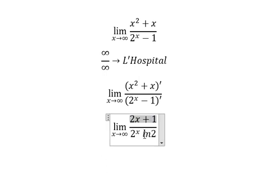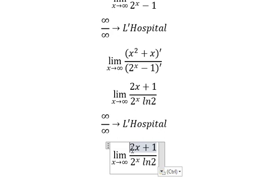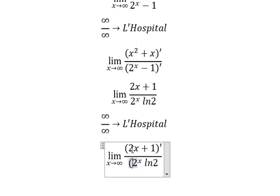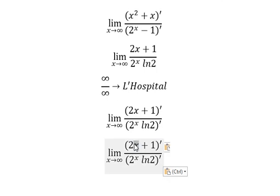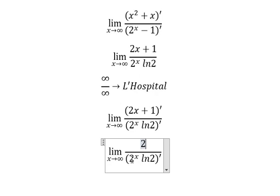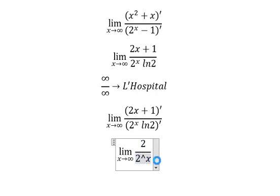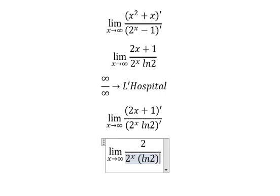Now if this one goes to positive infinity, this one will go to positive infinity, so we can use L'Hôpital's rule again. And now we have: this one we have number one, this one is the constant so you get zero, and down here we have 2 to the power of s times ln2, and we have another ln2, so we have ln2 to the power of two.